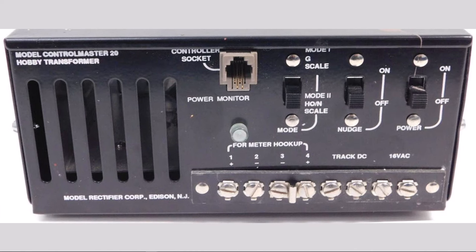Again, this is a standard type power supply. This is not what we're doing. We're eliminating the transformer and we're going to a switching type power supply. Now this is the back of the model control master 20 hobby transformer. Now notice it says transformer. It's got a big transformer in there. And then just quickly going through what you see here, you got a controller socket to plug in that walk around throttle. And then you've got a switch for either selecting HO N scale or G. That's not really necessary in modern electronics. We're talking about the track DC and the power monitor controller socket. That's all we're concerned with.